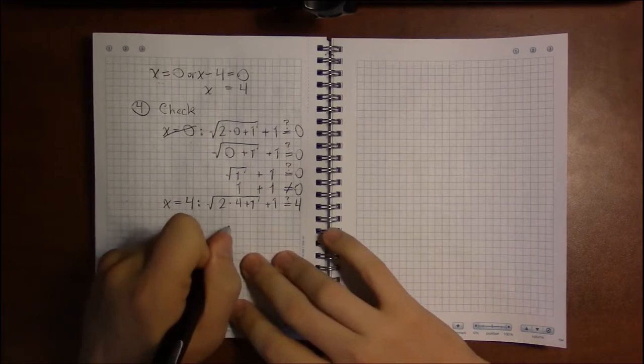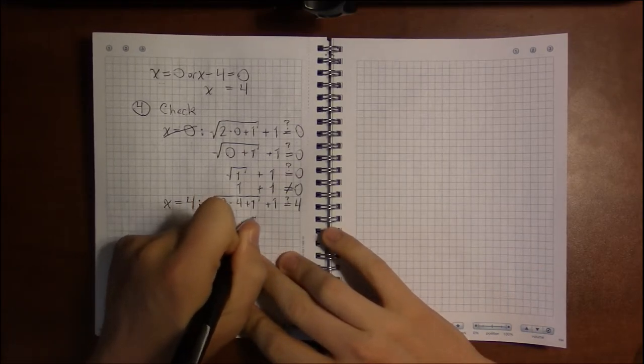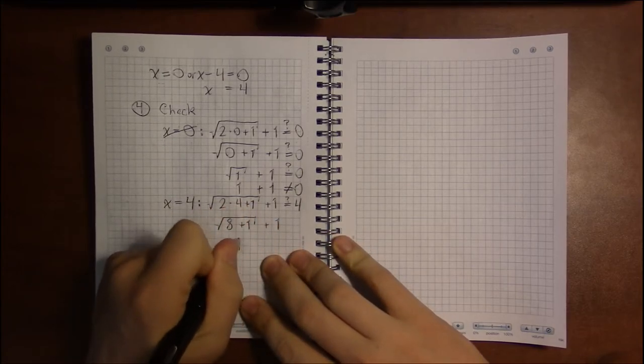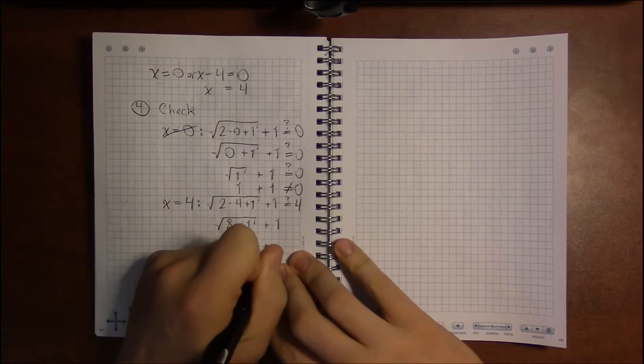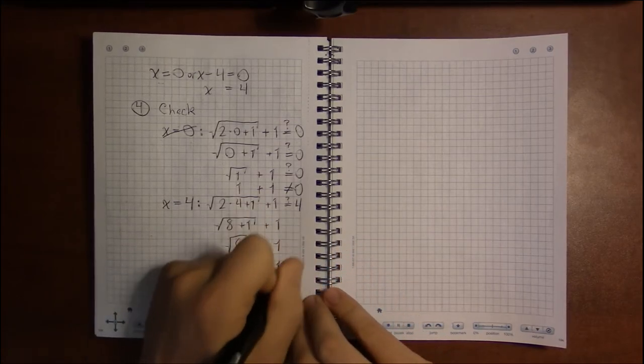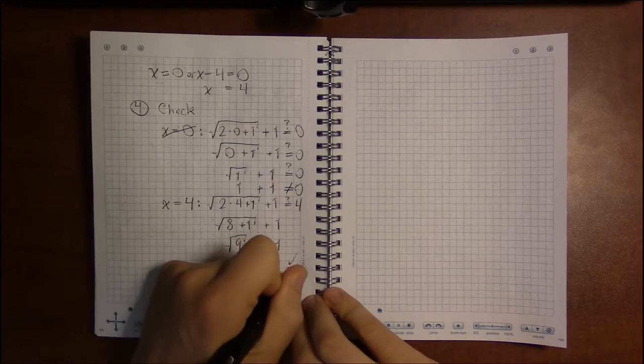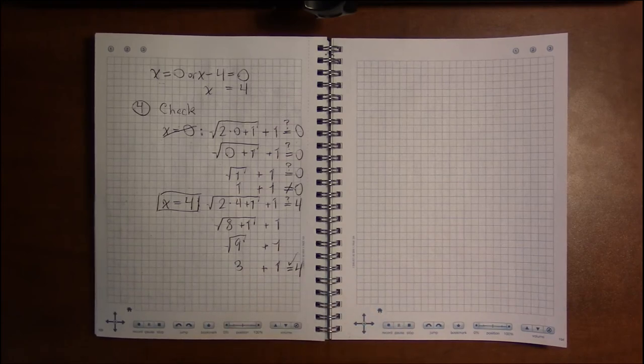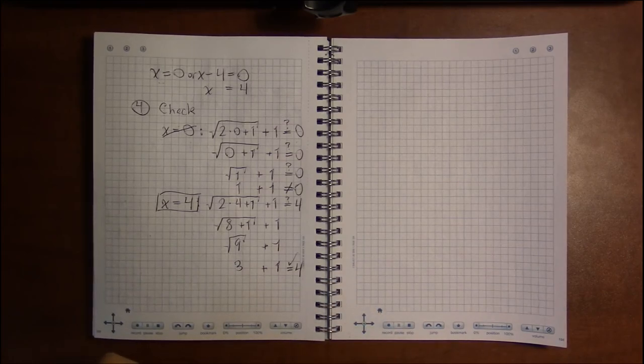Well, 2 times 4 is 8, then add 1. That should give us 9. Square root of 9 is 3, and add 1, and we certainly do get 4. So in this case, our only solution is that x equals 4.